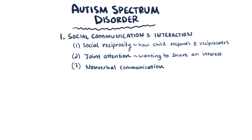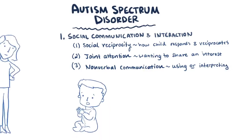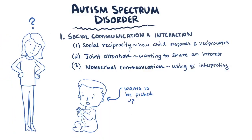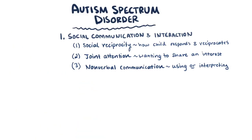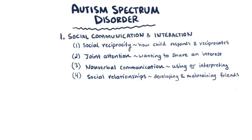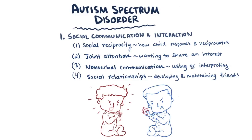Next, there's nonverbal communication, which refers to difficulties either using nonverbal communication themselves or interpreting nonverbal cues from someone else. So maybe the child won't put their arms out when they want to be picked up, or maybe they won't be able to tell when a parent is upset even if the parent is frowning and crossing their arms. The last subcategory of communication deficiencies is social relationships — children have trouble developing and maintaining relationships, so maybe the child has a hard time making friends or their behavior tends to drive friends away.